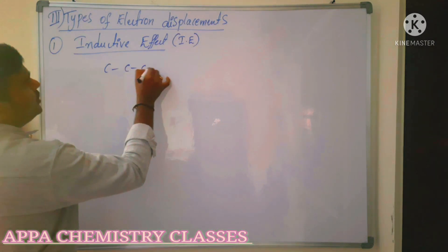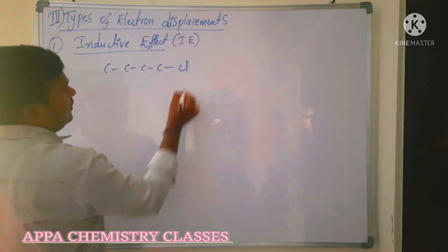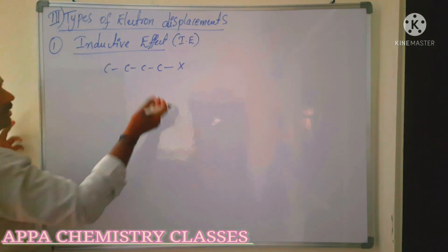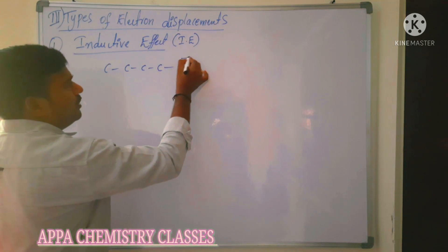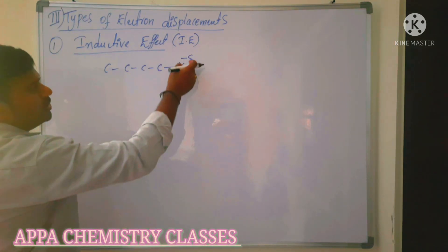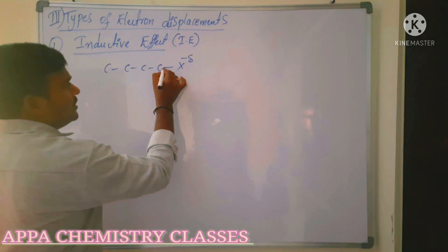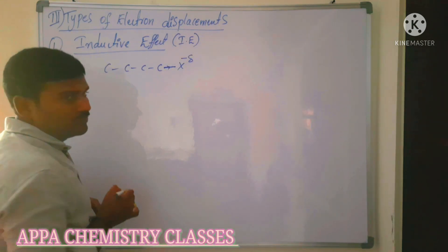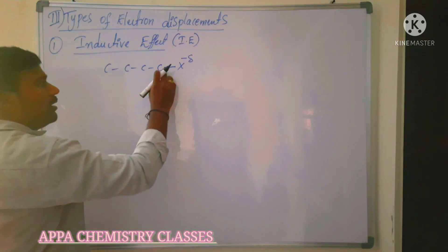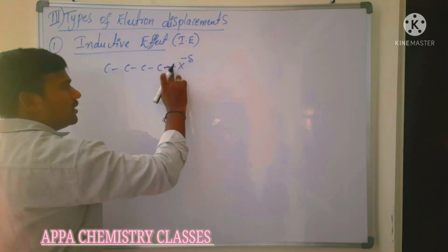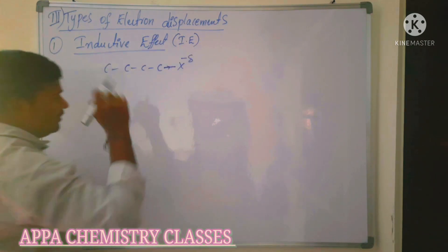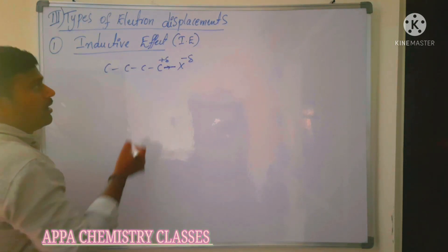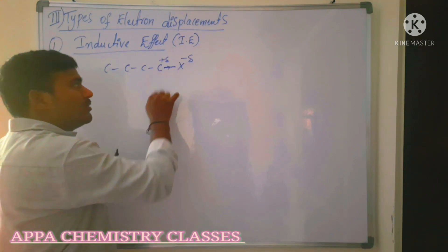For a simple example, consider a hydrocarbon attached to a halogen. Halogens are more electronegative atoms. The halogen attracts the bonded electron pair towards itself, so the carbon directly bonded to the halogen loses electron density and acquires a partial positive charge, while the halogen gains a partial negative charge.